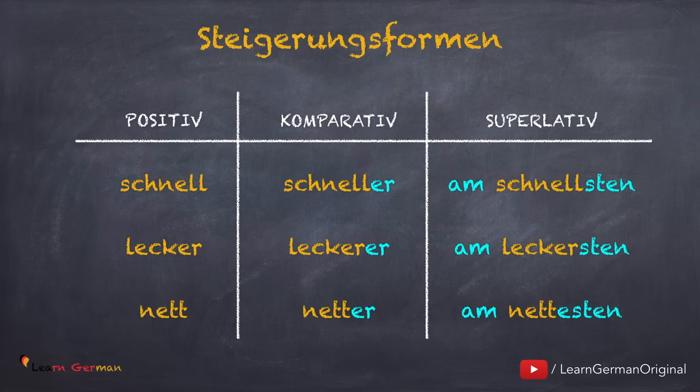So, die Steigerungsformen hier sind: schnell, schneller, am schnellsten. Lecker, leckerer, am leckersten. Nett, netter, am nettesten.